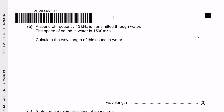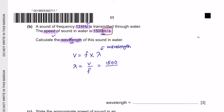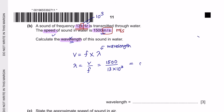Question B: A sound of frequency 13 kHz is transmitted through water. The speed of sound in water is 1500 m/s. Calculate the wavelength using v = fλ, rearranged to λ = v/f. The frequency must be converted: 13 kHz = 13 × 10³ Hz. So λ = 1500 / 13,000 = 0.12 m.